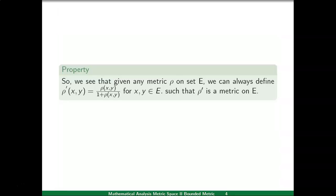So we have seen that given any metric rho on set E, it is always possible to define another metric rho dash as rho upon 1 plus rho, and we can prove that rho dash is a metric on E.